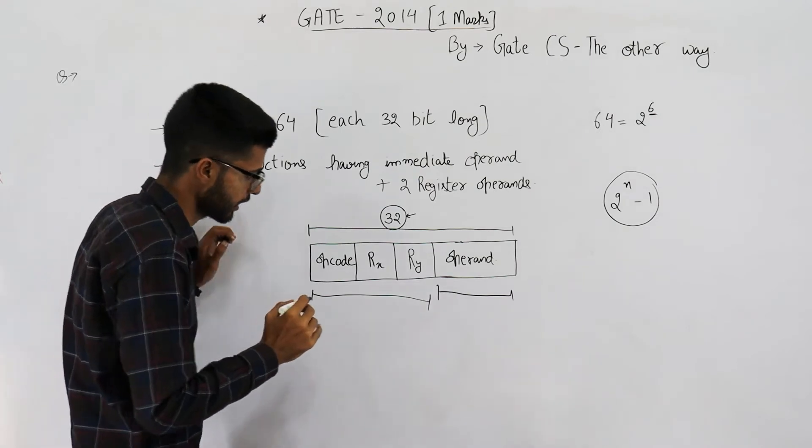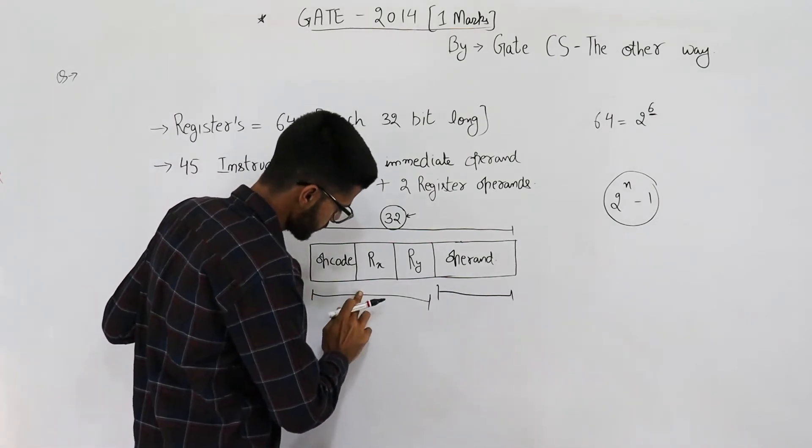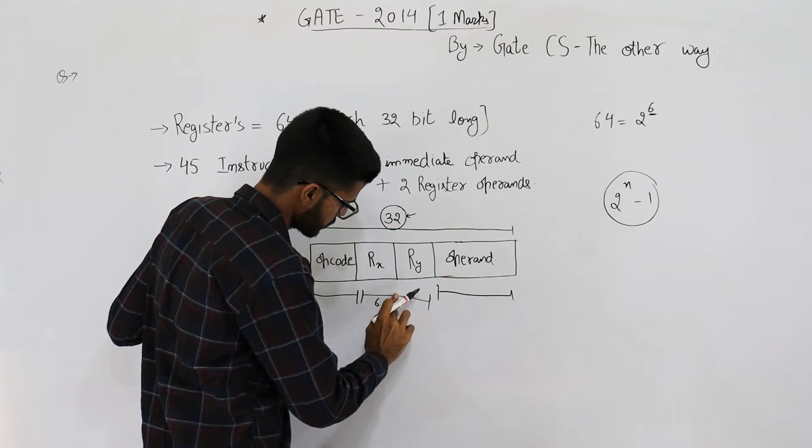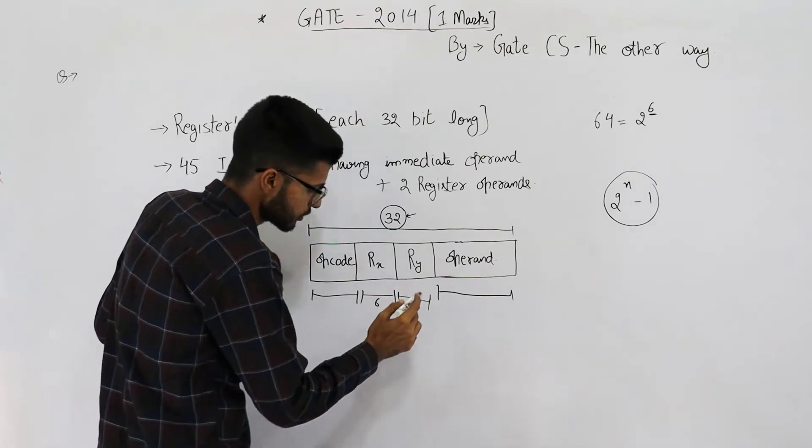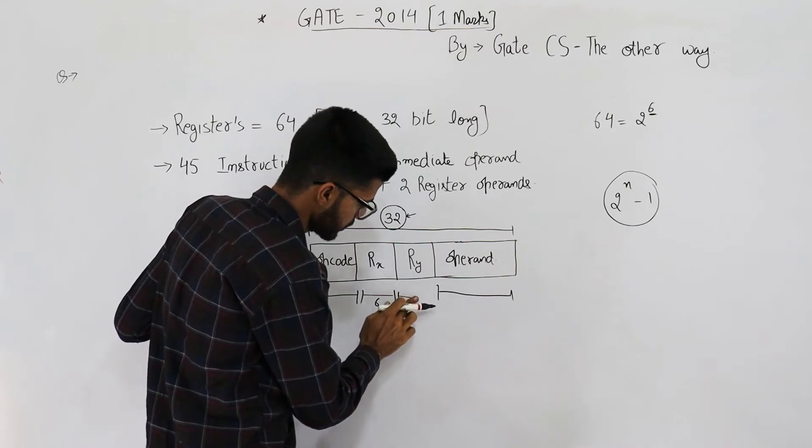That means this address is going to be 6 bits, and this part, this one, is also going to be 6 bits.